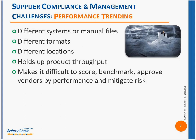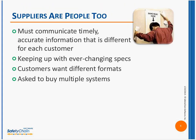One of the challenges is performance trending. All of the different information coming in from suppliers is very often in different systems, different files — it's manual, often in many different formats. There's paper, email, online information, PDFs. Depending on the size of your company, a lot of this information isn't even in the same building. This is holding up product throughput. It's also making it very difficult to score, to benchmark, and to approve vendors and supplier performance, as well as mitigating risk.